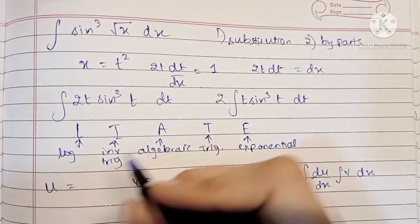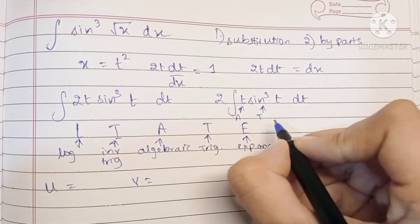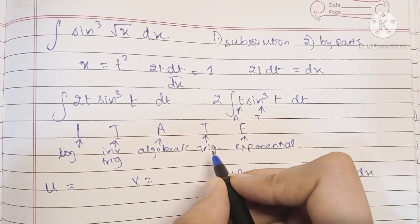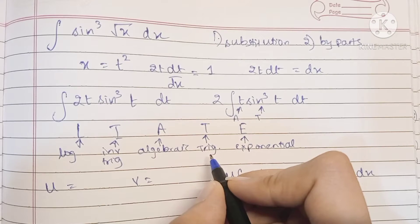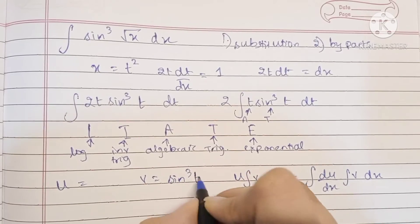We have two terms over here: t is the algebraic term and sine is the trigonometric term. Because trigonometric comes after algebraic in the LIATE rule, we will place the trigonometric term as the v term, and u becomes t.